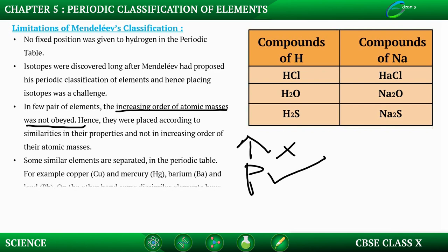Some similar elements were separated in the periodic table — for example, copper and mercury, and barium and lead — while some dissimilar elements were placed together in the same group. These limitations kept increasing as more elements were discovered, and Mendeleev's classification could no longer be followed, creating the need for a new method of classification.